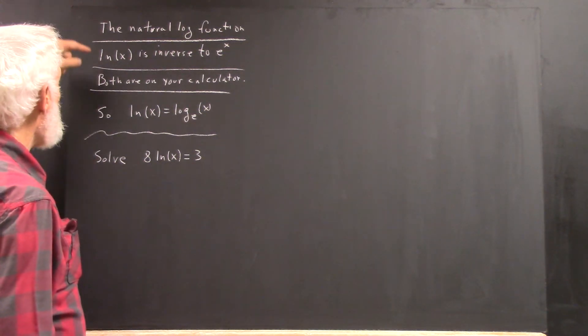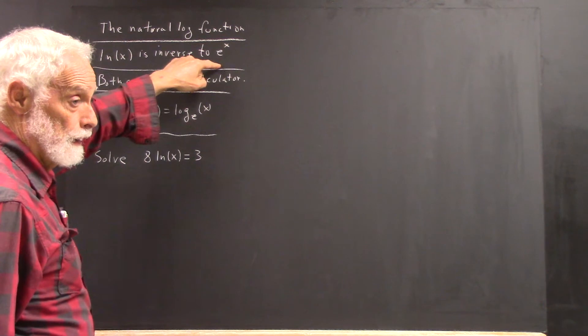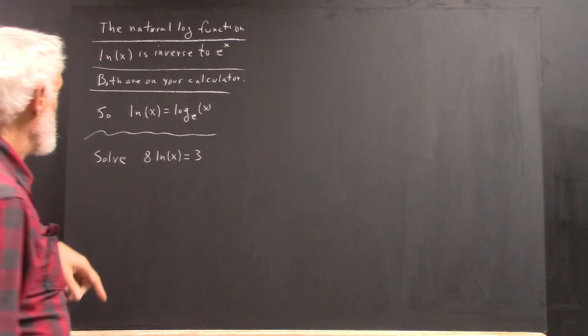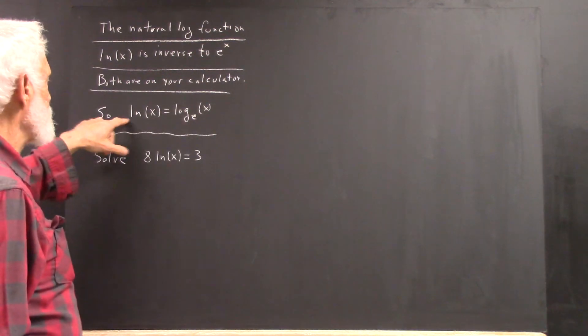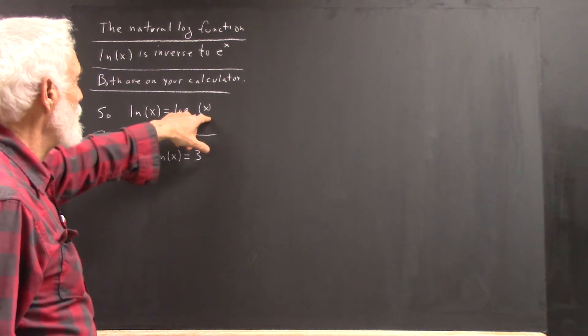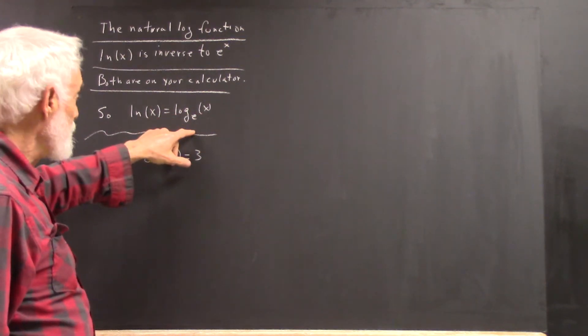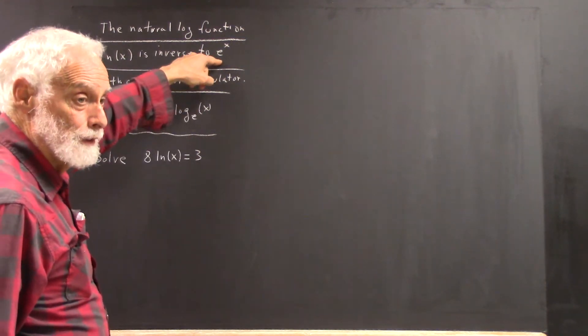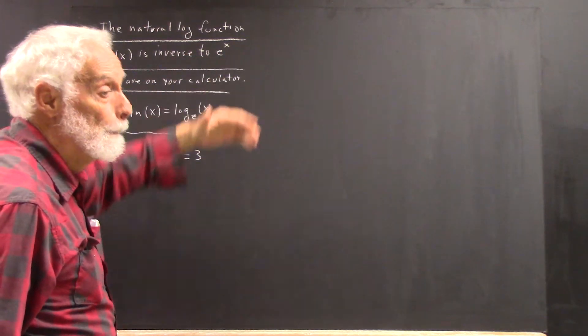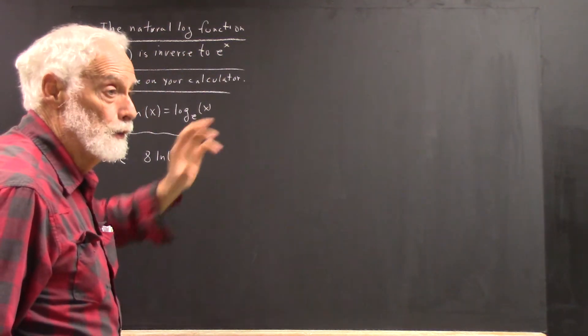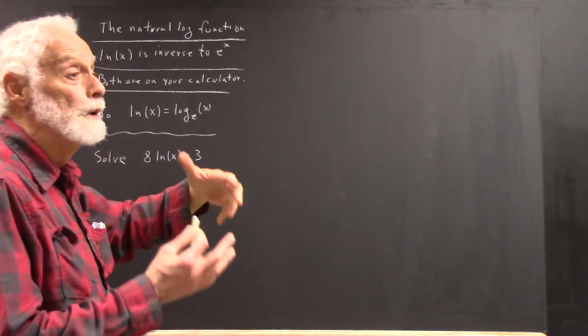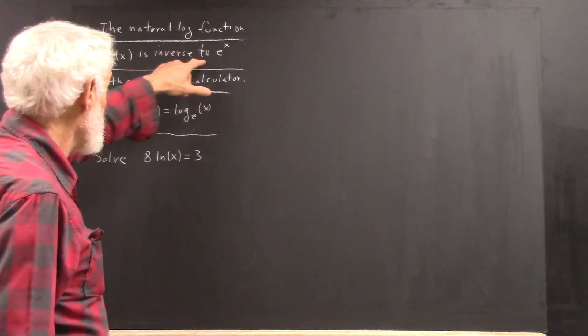It follows, if natural log is inverse to e to the x, that natural log of x is the log to the base e of x. Because log base e is inverse to e to the x. Log base b is always inverse to b to the x. So if b happens to be e, we give this.